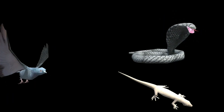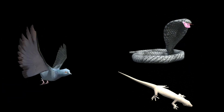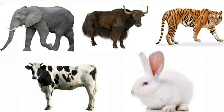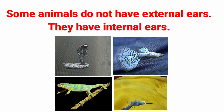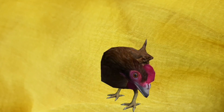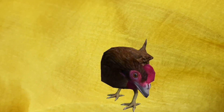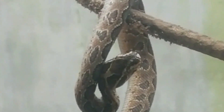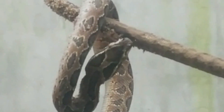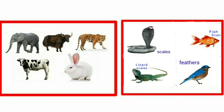What are the differences between the first group of animals and the second group of animals? The first group of animals have external ears. We cannot see the ears of some animals — these animals have internal ears. Birds have tiny holes on both sides of their head, which are covered with feathers. Lizards too have small holes on their head. Animals such as snakes also have internal ears. They can sense sounds through vibrations on the ground.